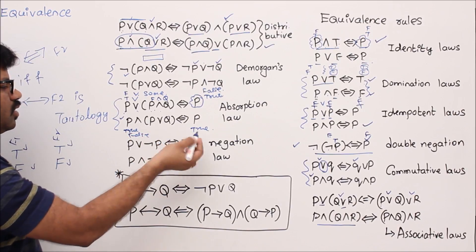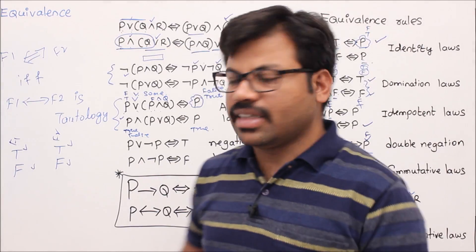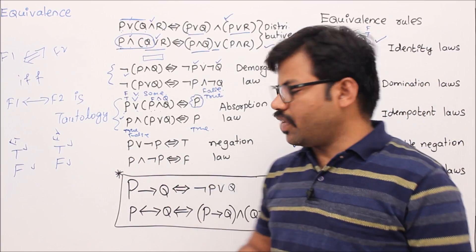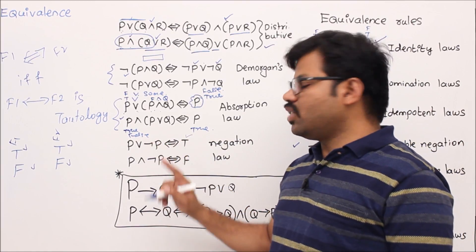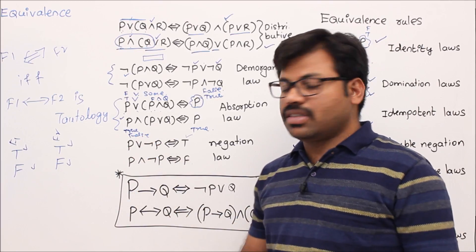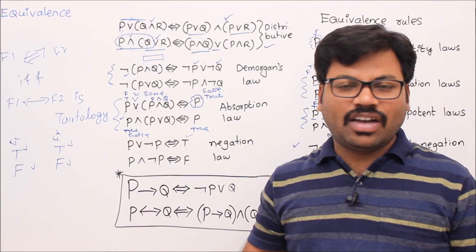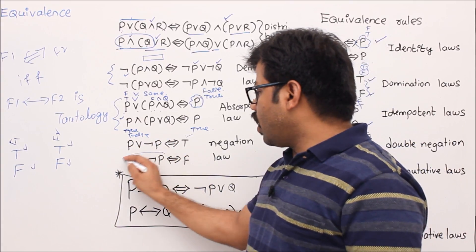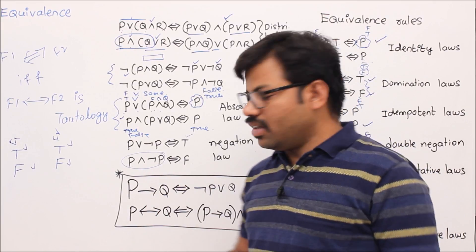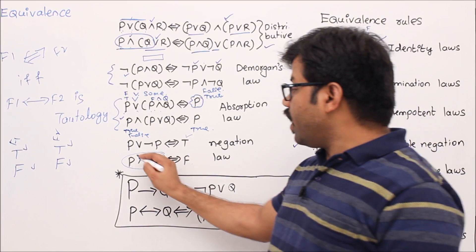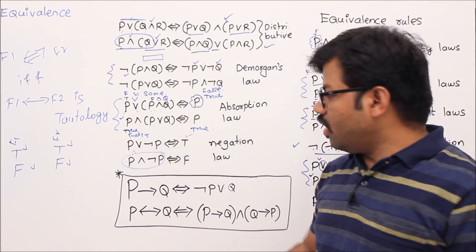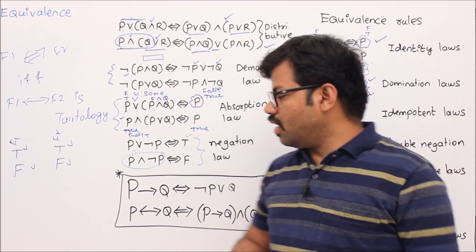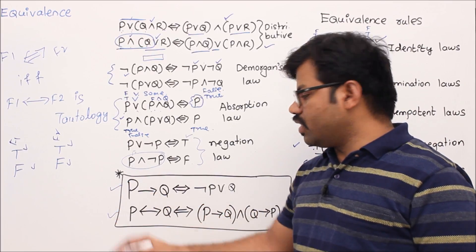Now the last negation laws. p∨¬p is equivalent to true — it is a tautology. When p is true, true∨anything is true; when p is false, ¬p becomes true, so false∨true is true. Whatever value you take for p, this is always true. Similarly, p∧¬p is always false: when p is true ¬p is false, and when p is false, false∧anything is false. These two are the negation rules.